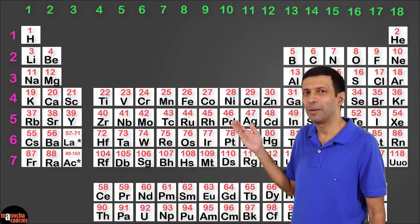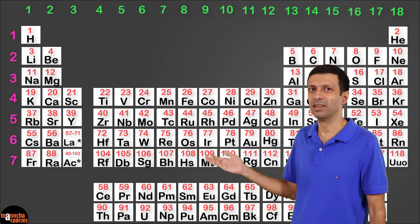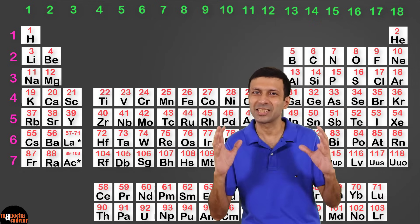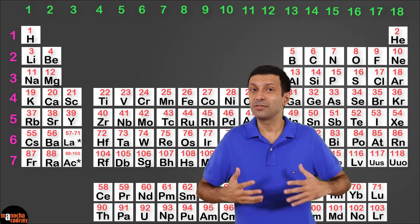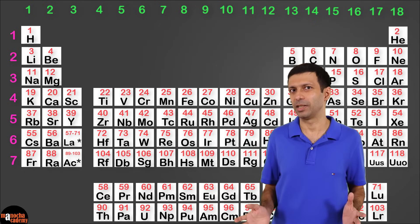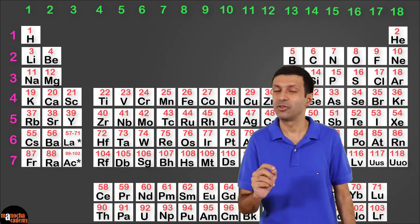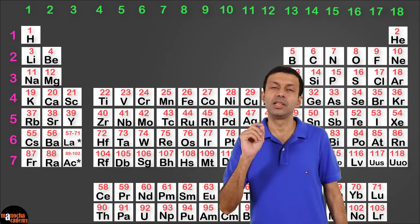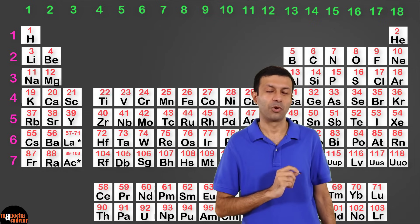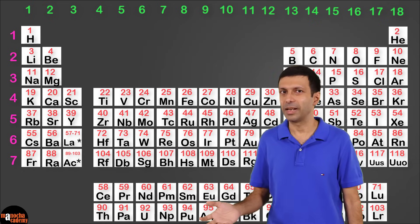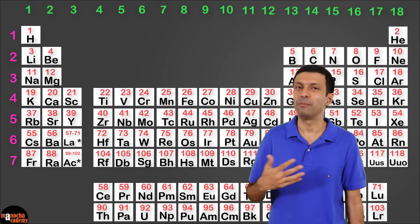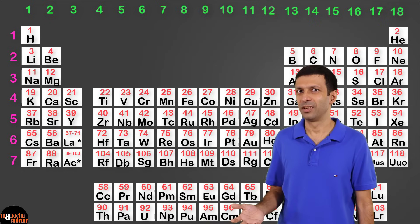We have a lot of details in our periodic table. Now let's go ahead and add some color. You might have seen these colorful pictures of the periodic table, where the colors represent the different types of elements - for example, metals, non-metals, noble gases and metalloids.